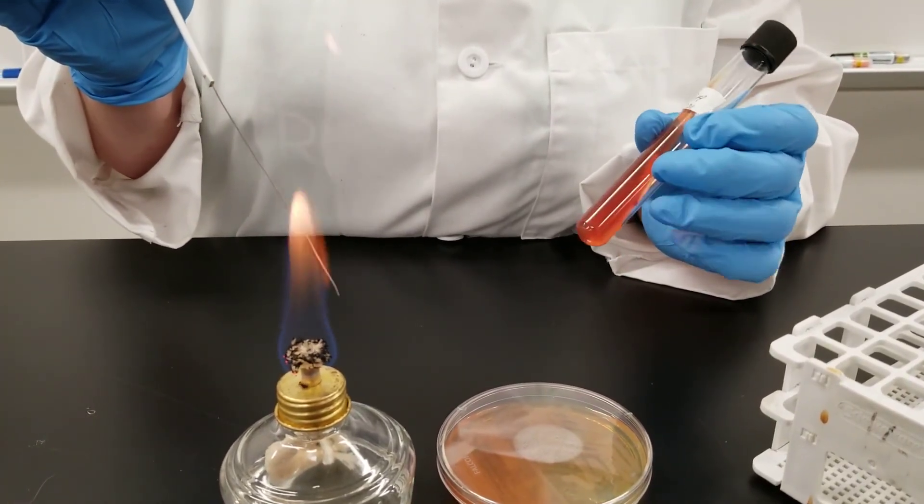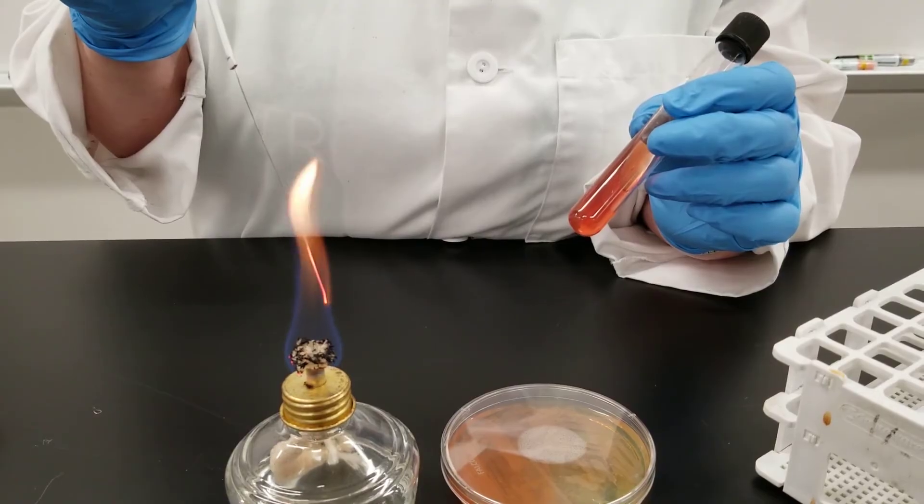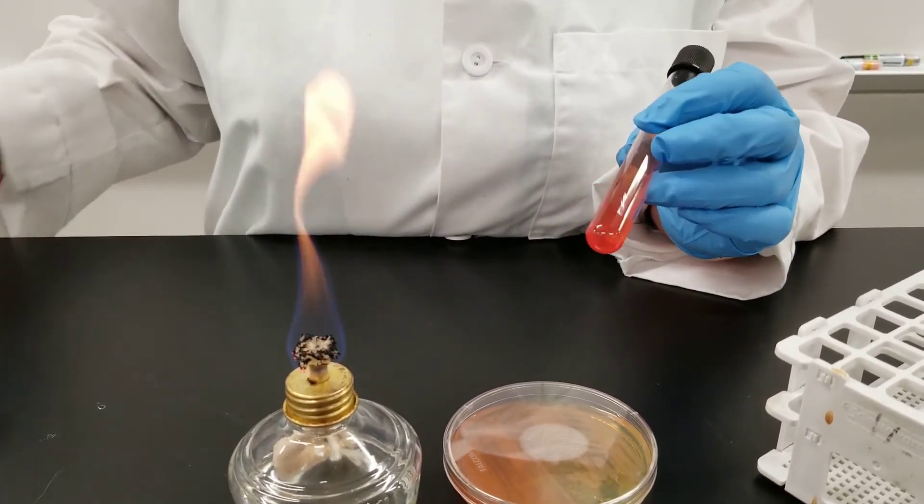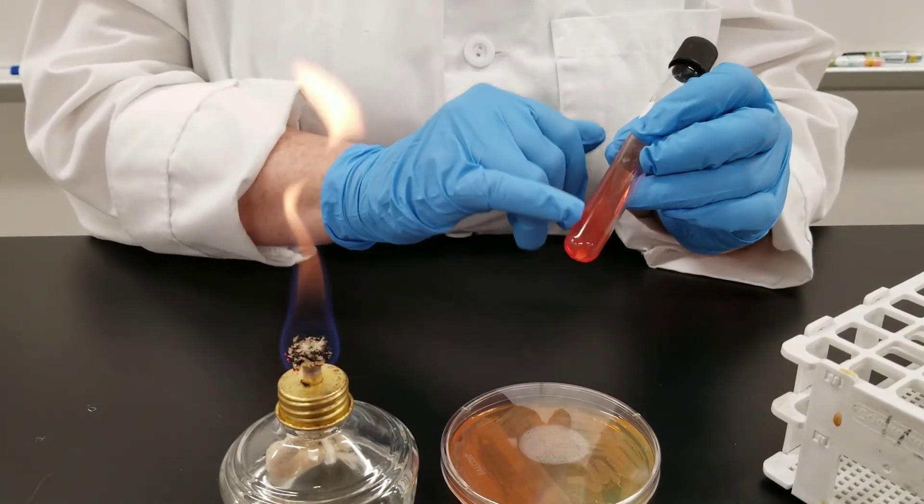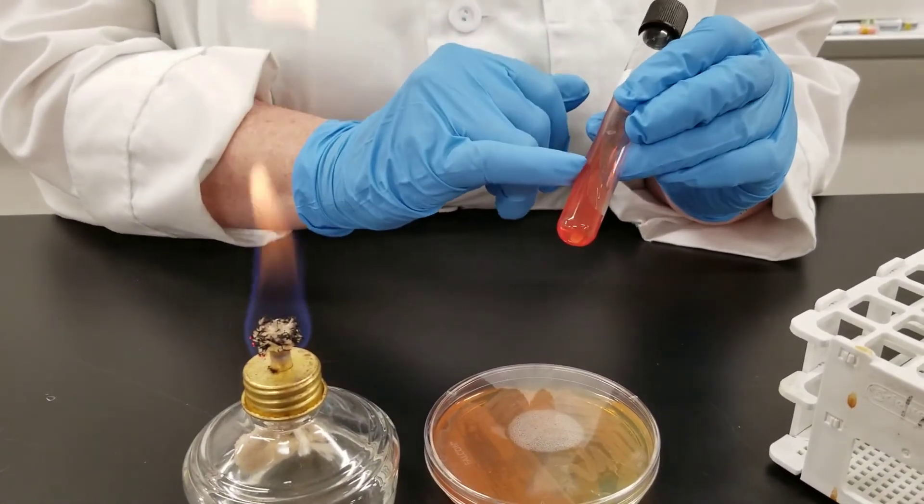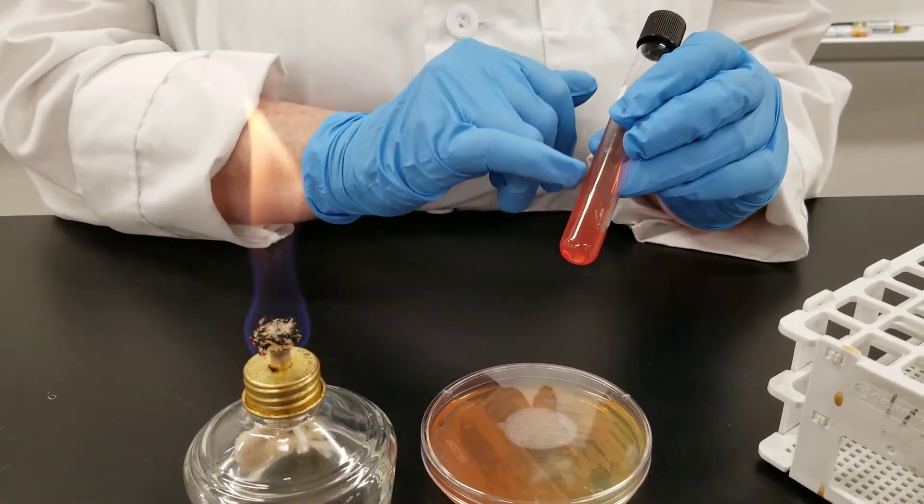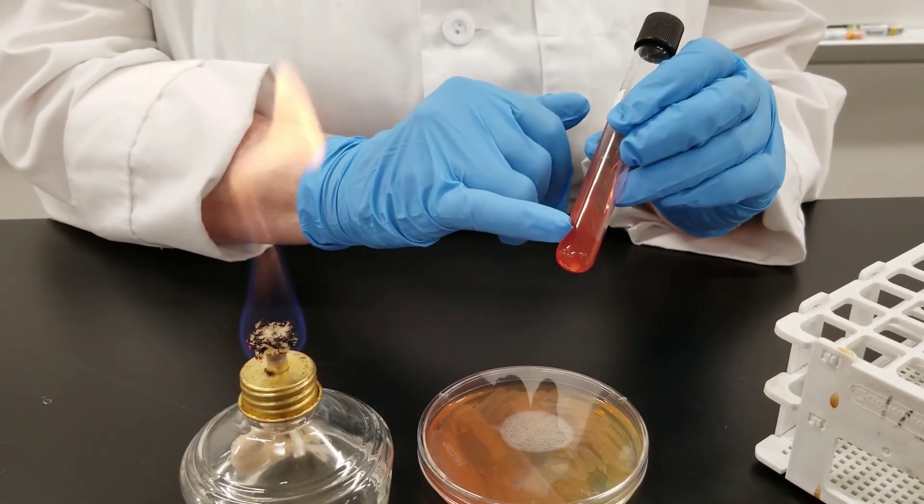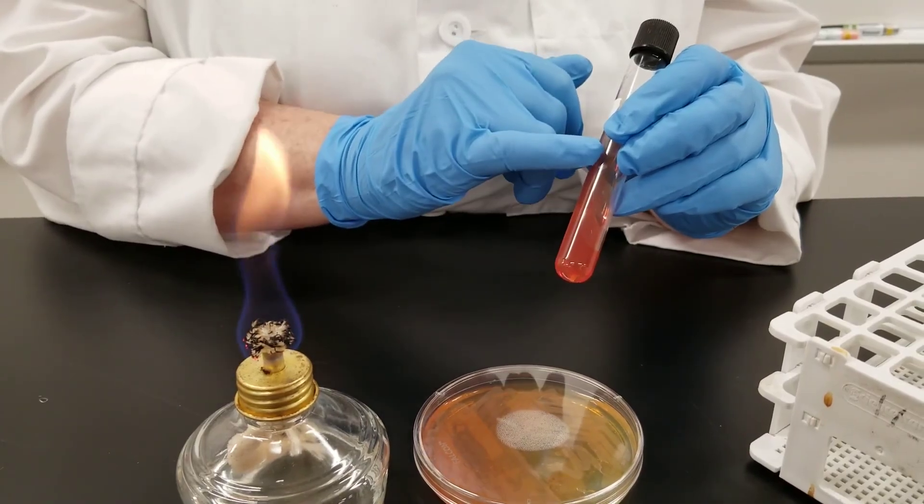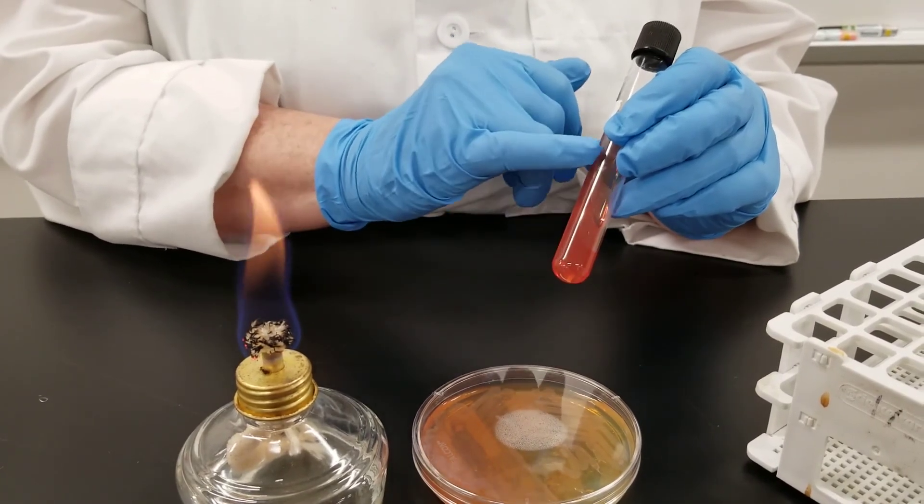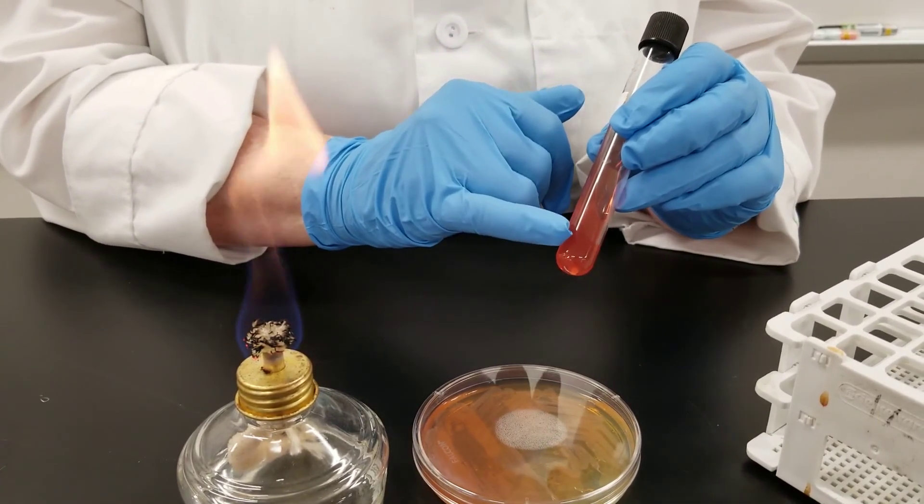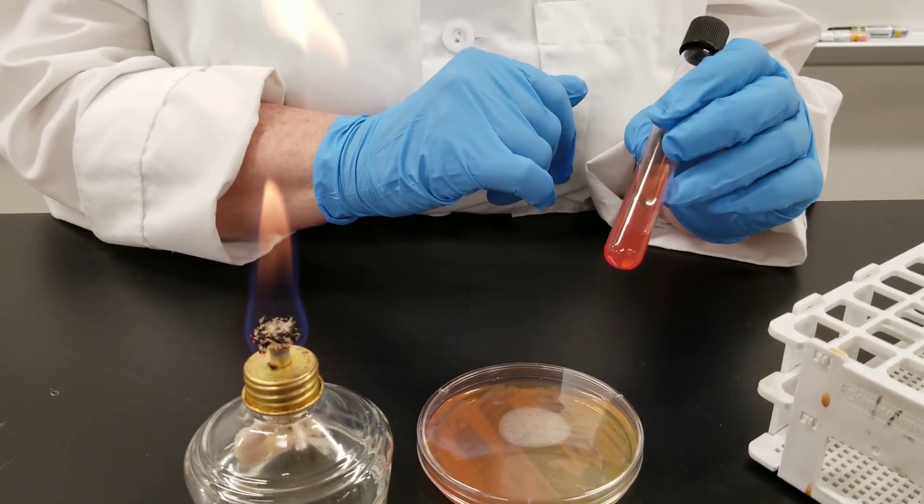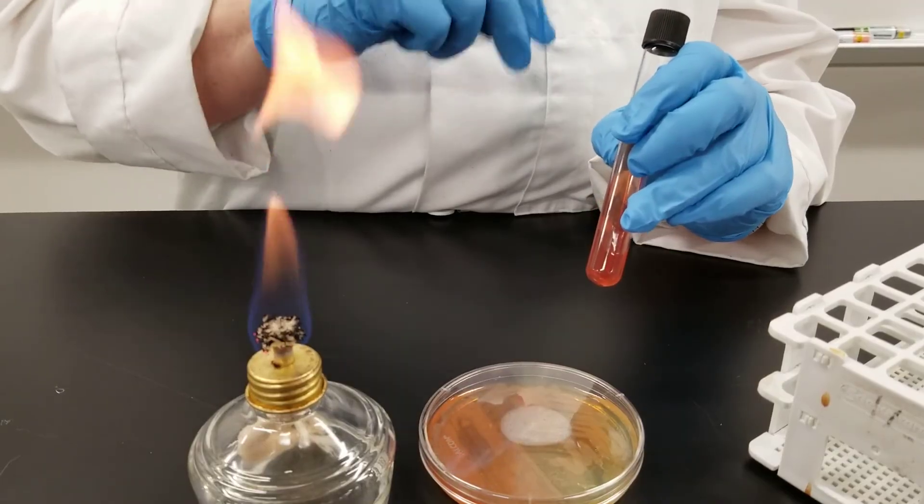What we've done is the bottom part of the tube, set this aside to cool. We have inoculated down in this area. This is the slant, this is the butt. We are going to look, depending on the organism, sometimes you get different results on the slant versus the butt. So that's what we are looking for. Some organisms you will get the same result, some you will get different results. So that's what we're going to be looking for. That's why we have to stab down into the butt.